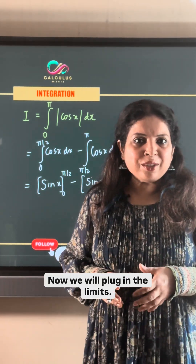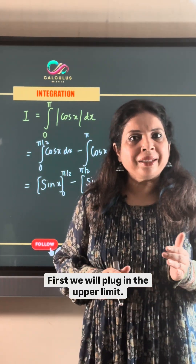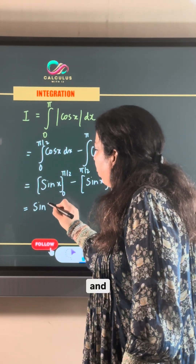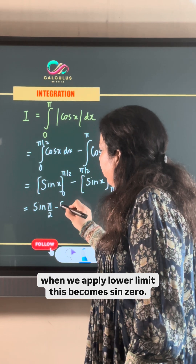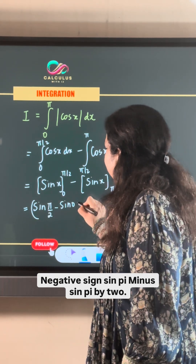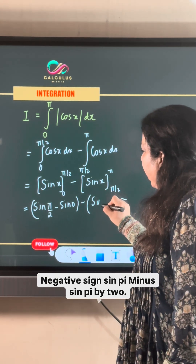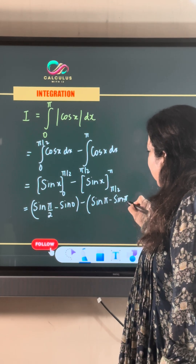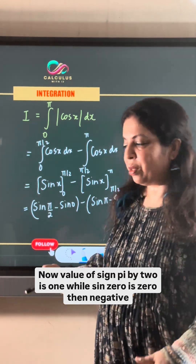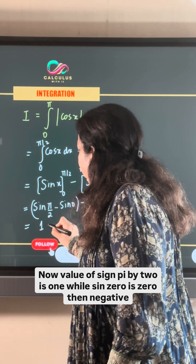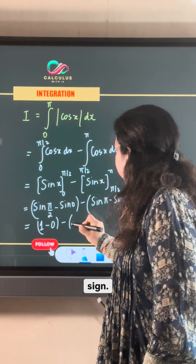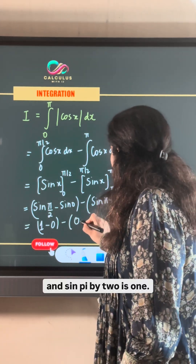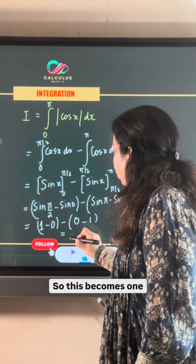Now we will plug in the limits. First, we apply the upper limit: sin(pi/2) minus sin(0), then negative of sin(pi) minus sin(pi/2). The value of sin(pi/2) is 1 and sin(0) is 0. Then for the second part, the value of sin(pi) is 0 and sin(pi/2) is 1.